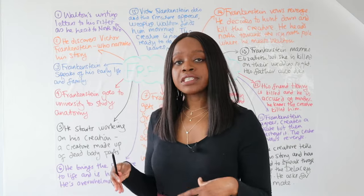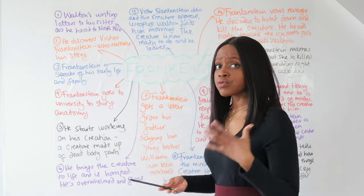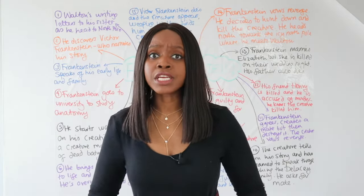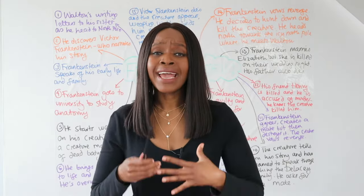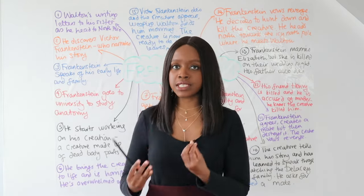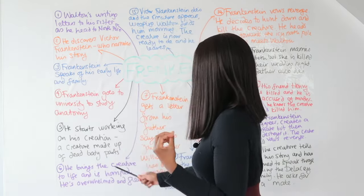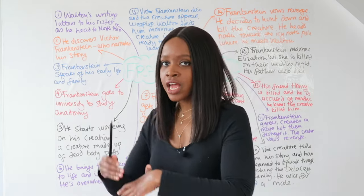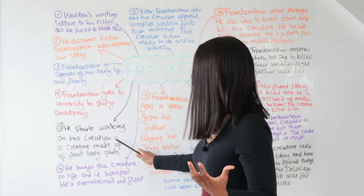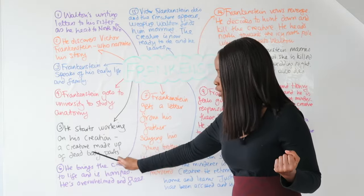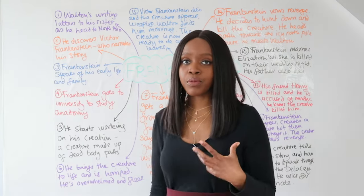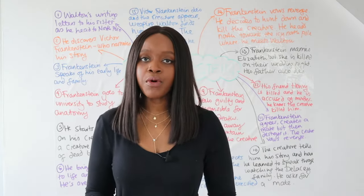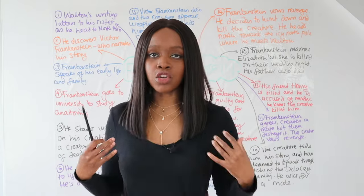Whilst at university studying anatomy and how the body works, he becomes really ambitious and starts working on what becomes a real passion project — something that consumes him to the point of obsession, and almost making him sick. Victor Frankenstein confesses that whilst he was at university he started working on his creation, essentially the crowning achievement of his university projects. This creation was a creature made up of dead body parts — he went to graveyards and dug up different body parts: head, eyes, hands, and so on.